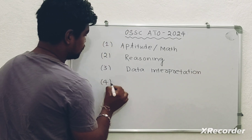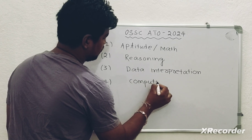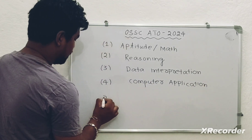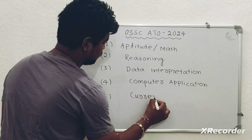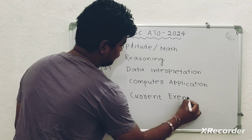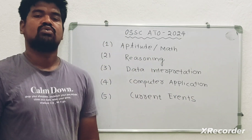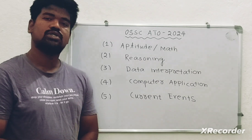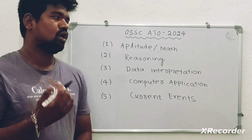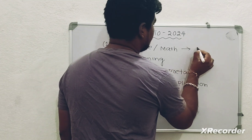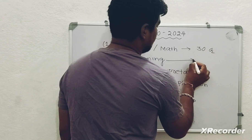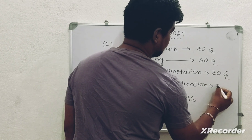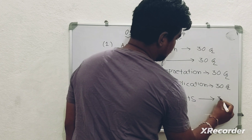Number four is Computer Application, or Computer and Internet — subject number five is Current Events. The first section covers the Math section, next is Reasoning and Data Interpretation, then Computer Application, and the last one is Current Events or Current Affairs. Math is having 30 questions, Reasoning about 30 questions, Data Interpretation about 30 questions, Computer Application about 30 questions, and Current Events about 30 questions.